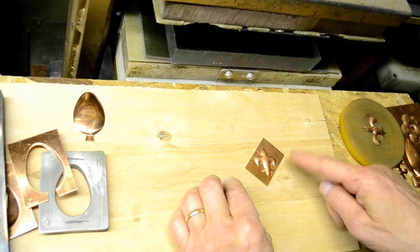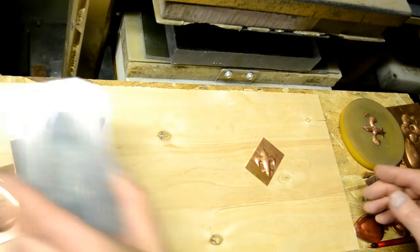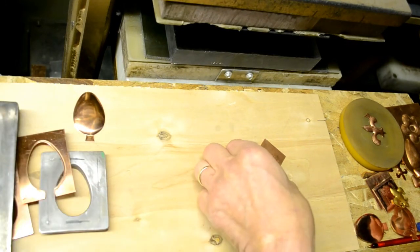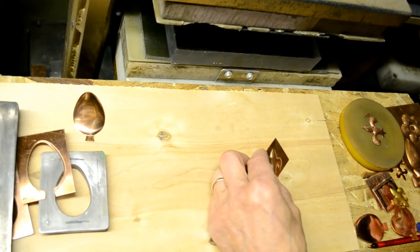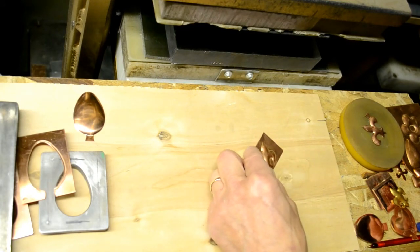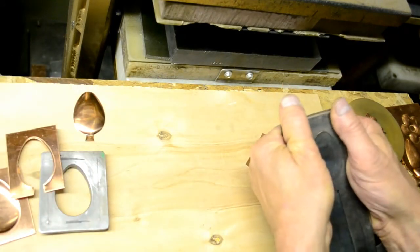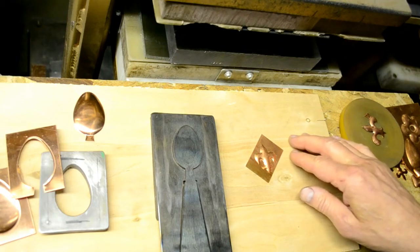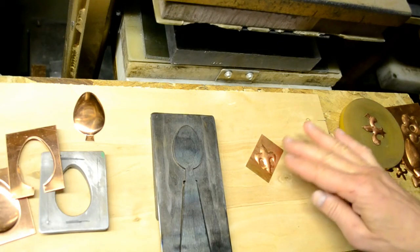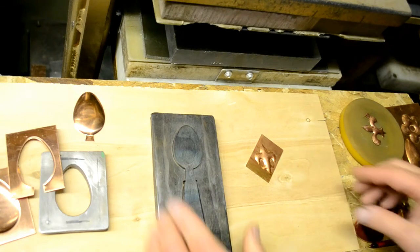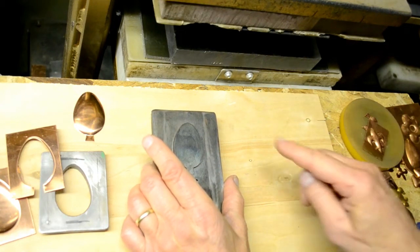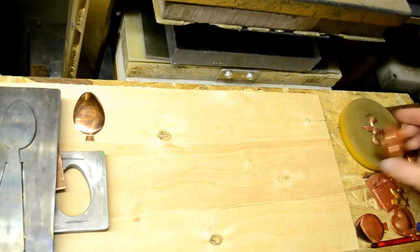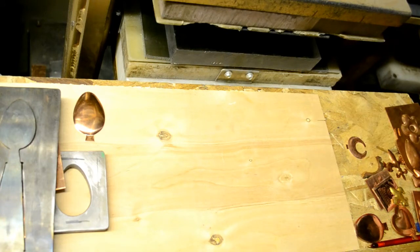And the nice thing about these dies that I make is that they're nice and tight so they'll cut thin metal. A lot of those real detailed impression dies require you to use thin metal to get all the detail formed well. And so this kind of die that I make is going to work great for that. They cut thin metal very cleanly.